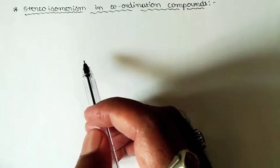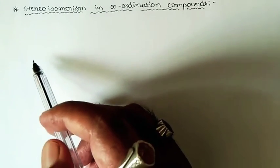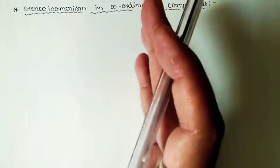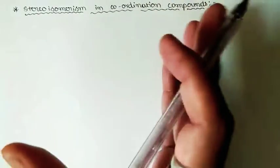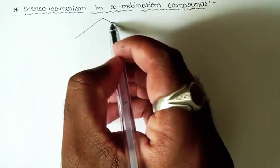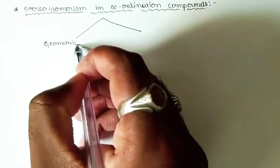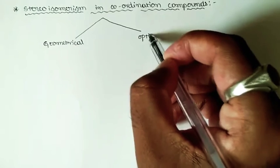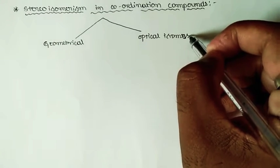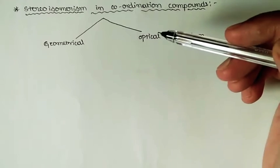Welcome back to the channel. In this video we shall learn about stereo isomerism in coordination compounds. Stereo isomerism arises because of variation in arrangement of atoms or groups around the central metal ion of coordination compounds in three-dimensional space. Stereo isomerism has been broadly classified into two categories: geometrical isomerism and optical isomerism.